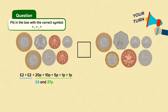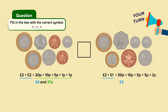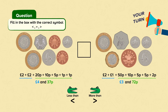Doing the same on the right hand side, looking at the pounds first, we have a two pound coin and a one pound coin — two pounds plus one pound equals three pounds. Now let's look at the pence: we have a 50p coin, a 10p coin, two 5p coins and a 2p coin. Adding all of these together we have 72 pence. Which side is bigger? Remember, Charlie the crocodile is very greedy and will always want to eat the larger side. Charlie will eat the group of coins worth four pounds and 37p, so we need this symbol. We know that four pounds and 37p is more than three pounds and 72p.